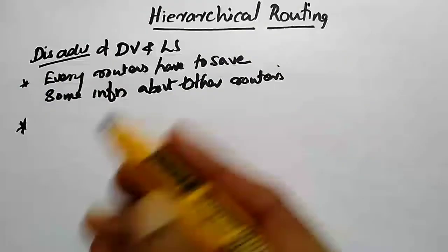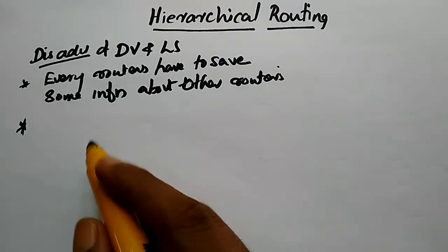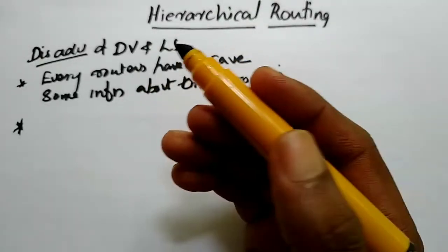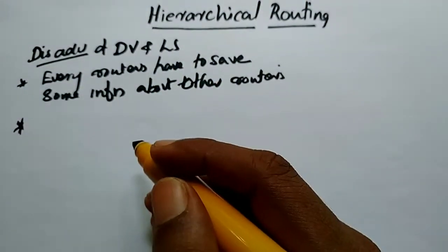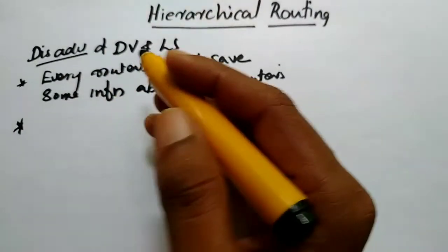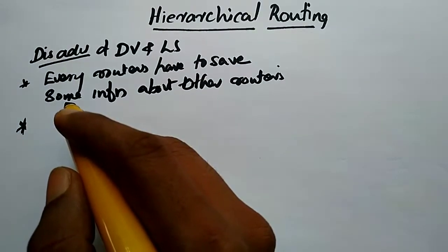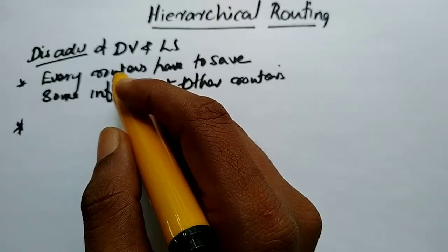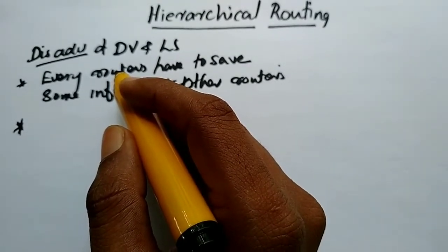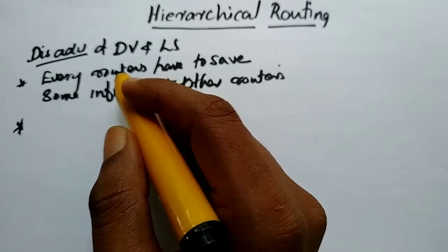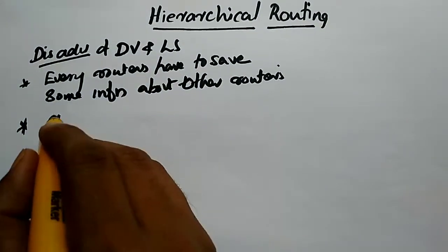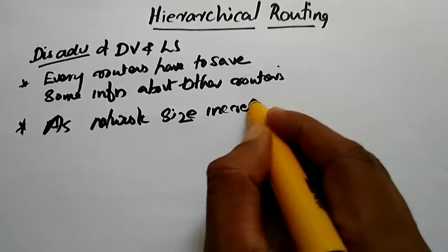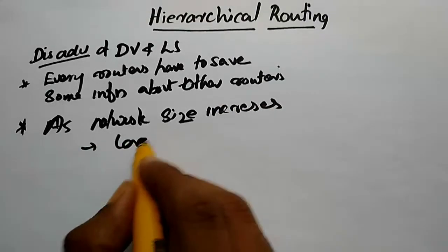We are going to study the routing table. The routing table will be a very good routing table and we will use this. We will save all the information and all the data. Then we will consider the network size — as the network size increases, the tables become larger.